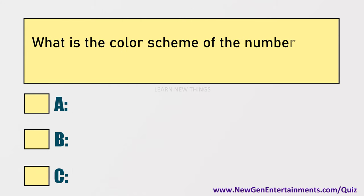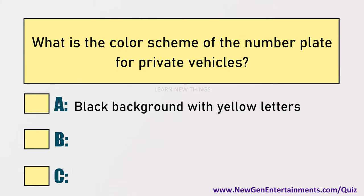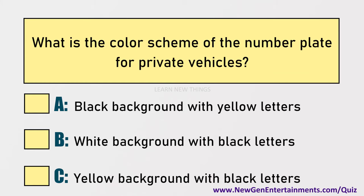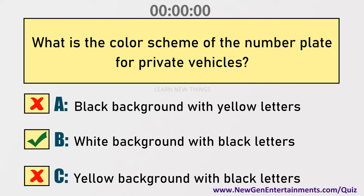What is the color scheme of the number plate for private vehicles? Options are: A) Black background with yellow letters, B) White background with black letters, C) Yellow background with black letters. Answer: Option B, White background with black letters.